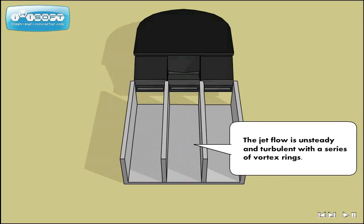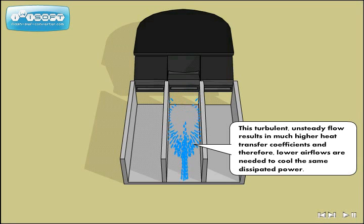The jet flow is unsteady and turbulent with a series of vortex rings. This turbulent, unsteady flow results in much higher heat transfer coefficients and therefore, lower air flows are needed to cool the same dissipated power.